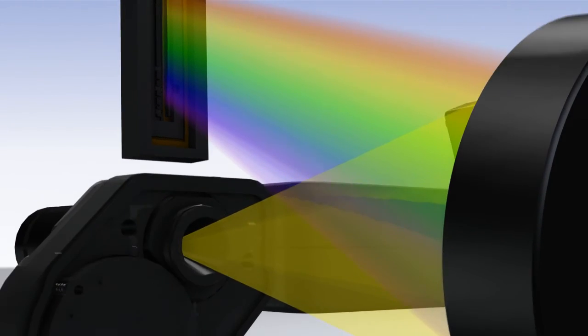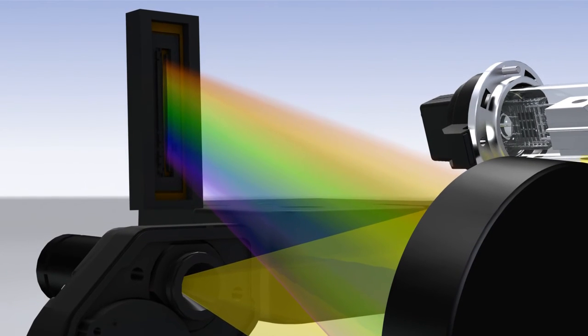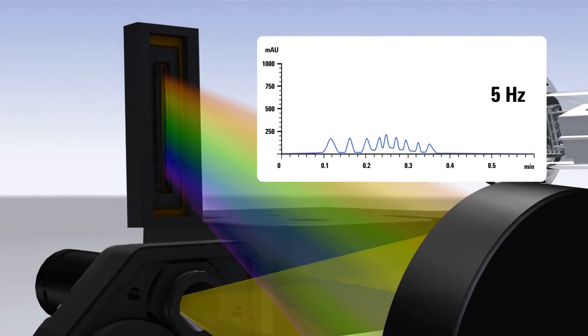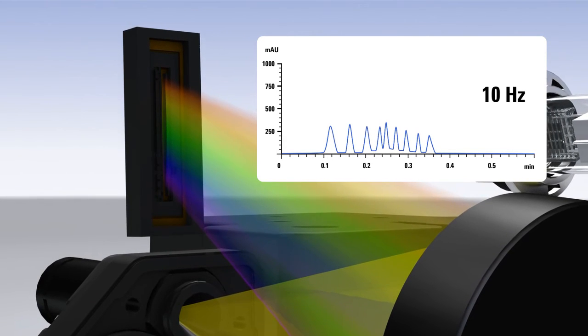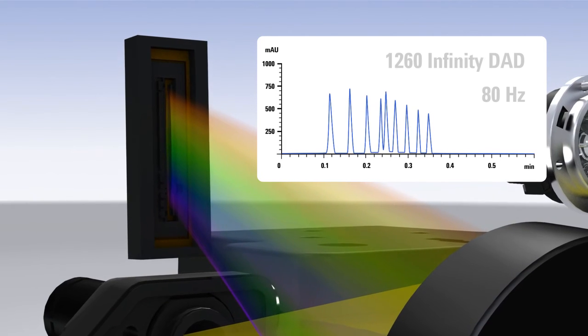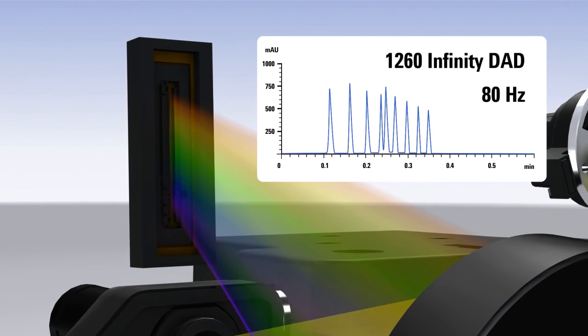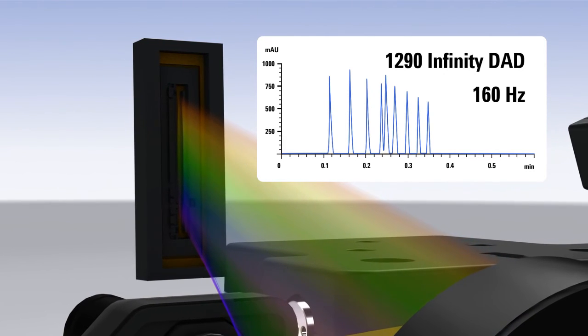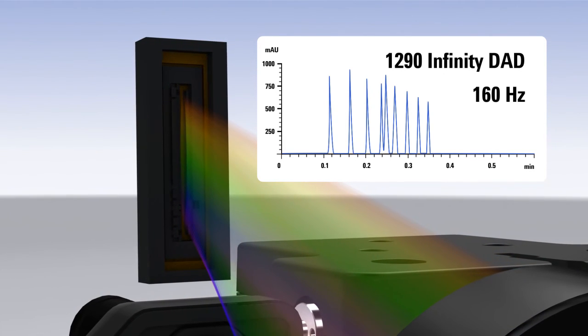Ultra-fast LC analyses with small peak widths require fast data rates to maintain chromatographic resolution. The Infinity Diode Array Detectors offer both multiple wavelength and full spectral detection at high sampling of 80 Hz with 1260 DAD and 160 Hz with 1290 DAD, keeping pace with the analysis speed of fast and ultra-fast LC.